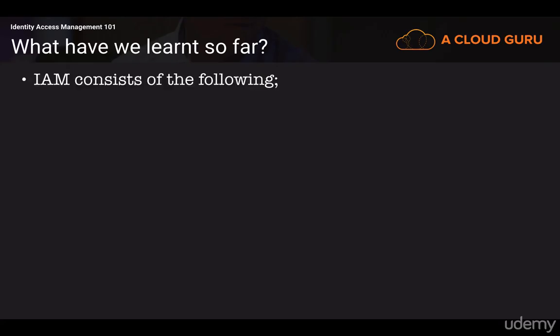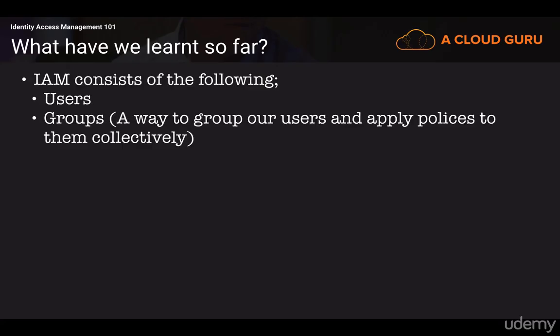IAM consists of the following: it consists of users, groups — and groups are a way to group our users together and apply policies to them collectively — roles, and then policies, which are made up of policy documents. We can take our policy documents and apply them to users, groups, and roles individually.